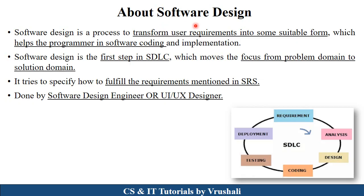The first thing is: what exactly is software design? In previous sessions, we discussed about the first phase of software development lifecycle, that is requirement gathering and analysis — how to collect requirements from the customer, types of requirements, how to analyze requirements, and different requirement models. Now, after requirement gathering and analysis, the next phase is the design phase. Basically, software design is a process of transforming all the user requirements into a suitable form or suitable design. This design helps a programmer for implementation purposes, because the output of the design phase moves forward to the coding phase. Software design is the first step in SDLC which focuses on moving from the problem domain to the solution domain. Previously we just gathered requirements; here we provide the solution in the form of design. Software design fulfills all the requirements mentioned in SRS and this phase is handled by the software design engineer or UI/UX designer.